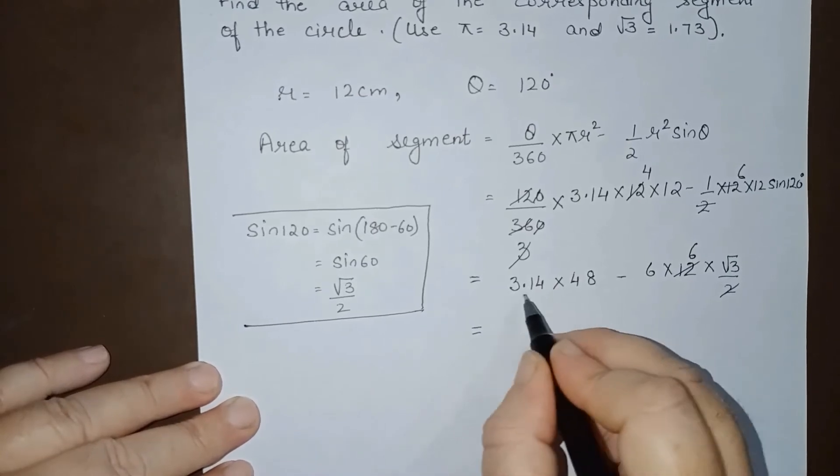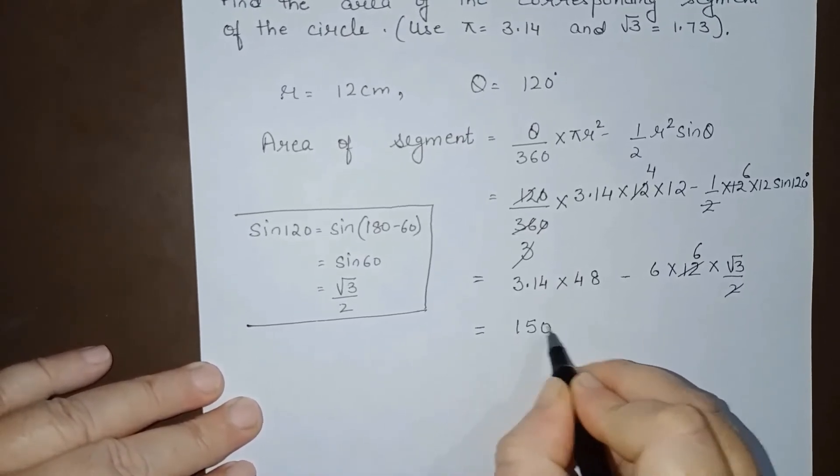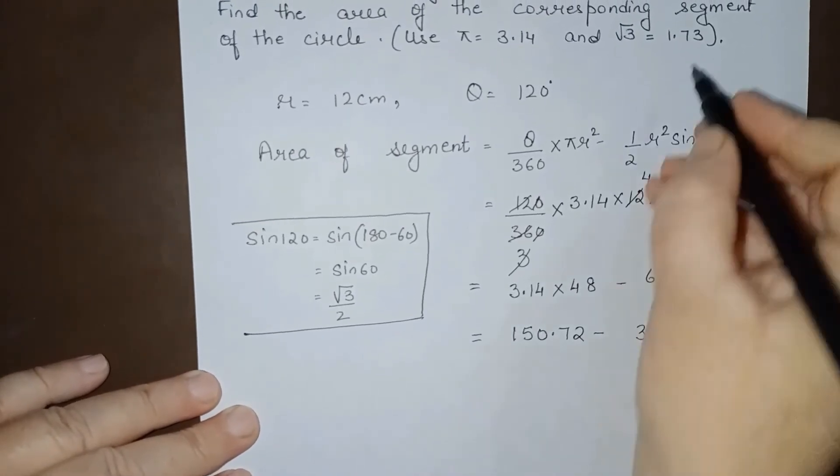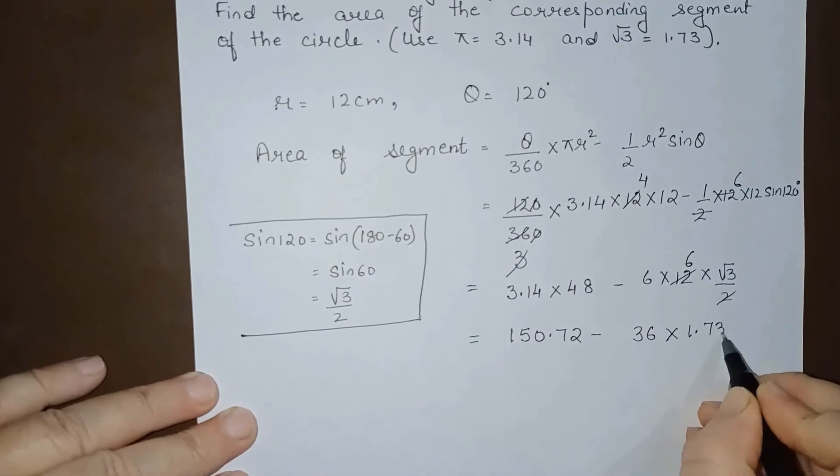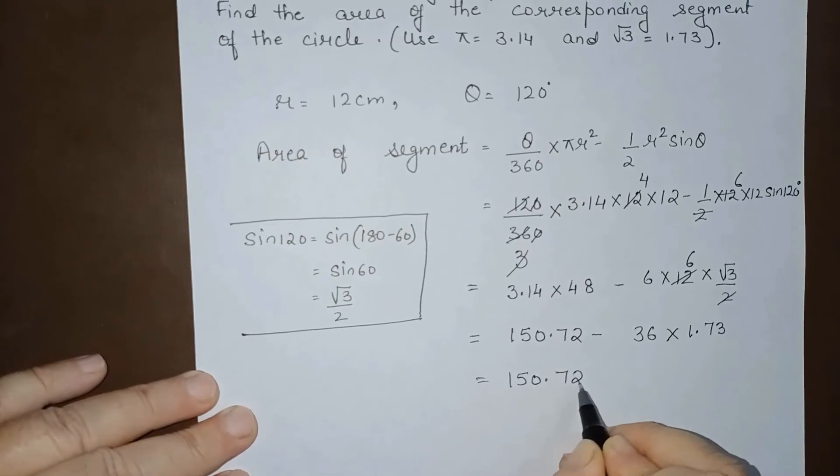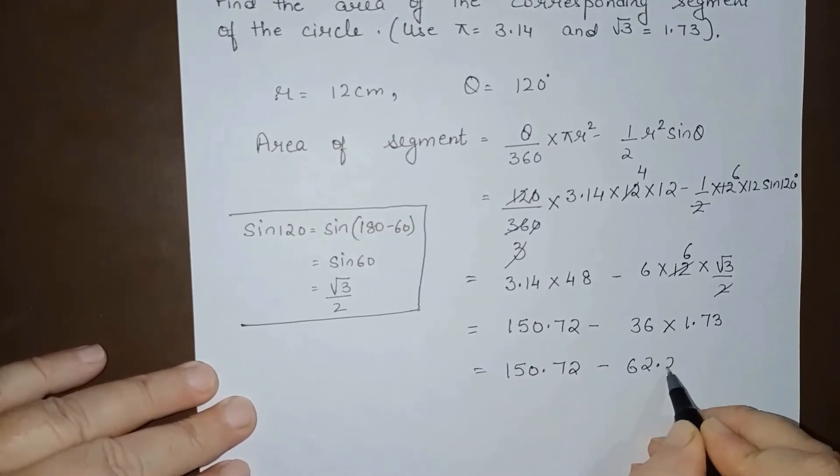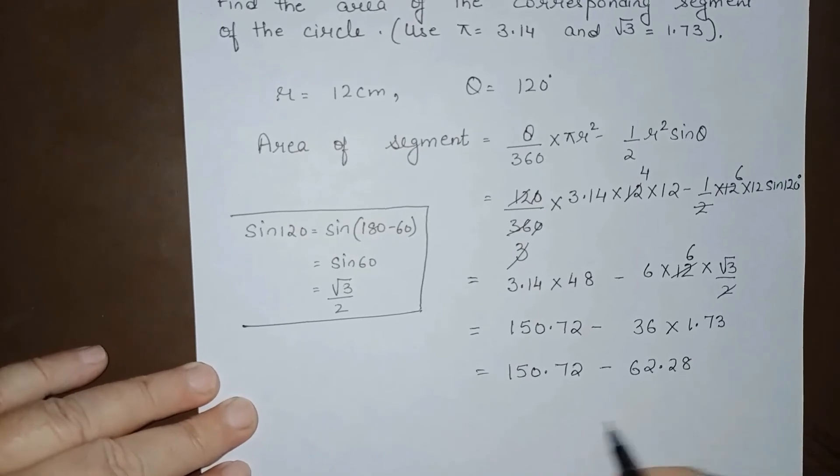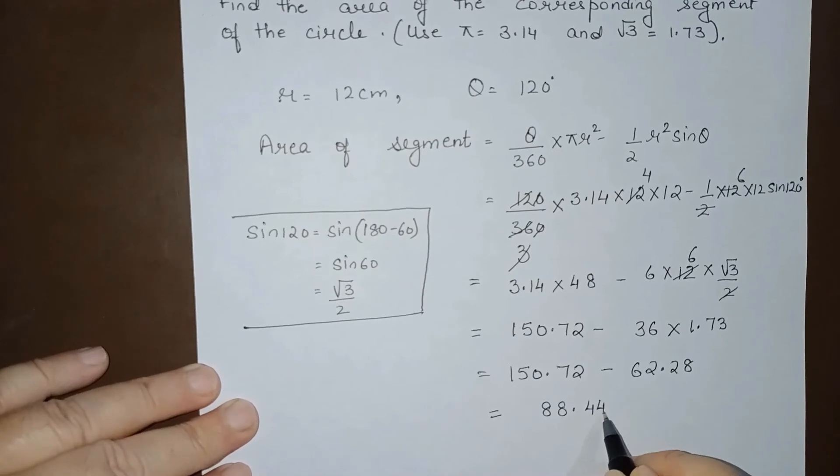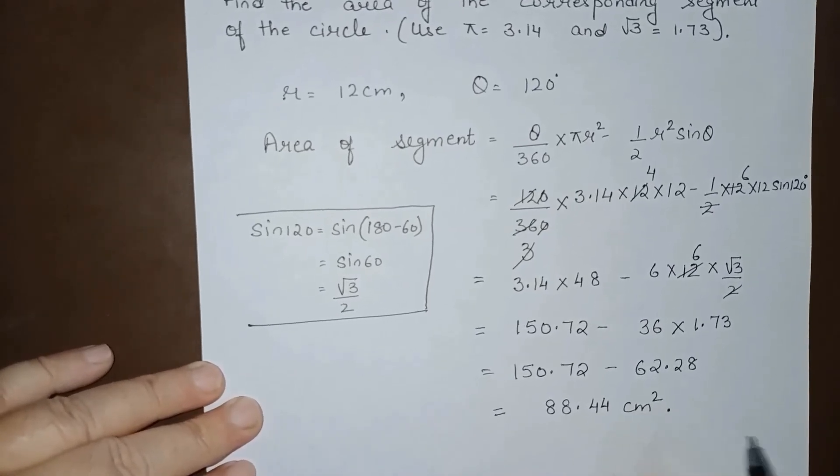Multiplying 3.14 × 48 gives 150.72. For 36√3, using √3 = 1.73, we get 36 × 1.73 = 62.28. So 150.72 - 62.28 = 88.44 cm². This is the answer.